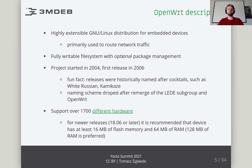OpenWrt officially supports over 700 different devices. The full list is available on the project website at the link on this slide. For the latest releases from version 18.06, it is recommended that the device running OpenWrt has at least 16 megabytes of flash memory and 64 megabytes of RAM, with 128 megabytes being preferred. Nowadays these requirements do not seem to be difficult to meet.